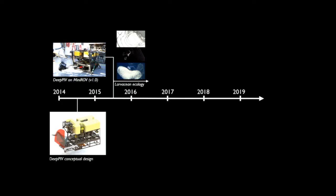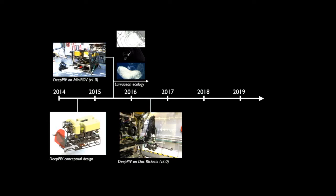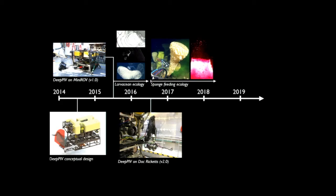Since 2015, a version 2.0 now exists: a separate camera-laser package that can be affixed to the manipulator on an ROV, used on all three of MBARI's ROVs. Work is beginning on benthic boundary layers and sponge feeding ecology with Jim Barry. In two weeks, a version 3.0 — a much smaller package — will be deployed, with the hope of enabling use on a variety of platforms beyond MBARI's ROVs. Since the first deployment, there have been 58 deployments of the instrument, with all dives resulting in useful data.